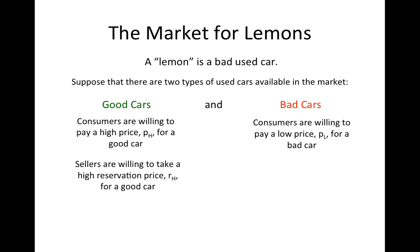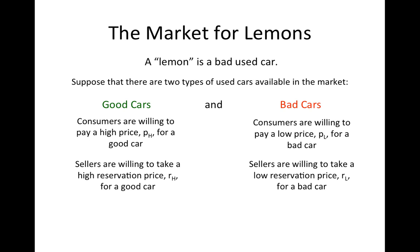Sellers of good cars have a high reservation price RH, and sellers of bad cars have a lower reservation price RL. If consumers can distinguish good cars from bad cars, then the market will result in an efficient outcome. The problem occurs if consumers cannot distinguish a good car from a bad car.